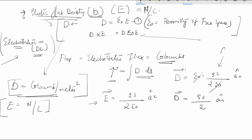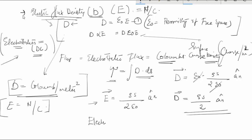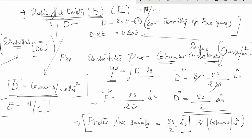Here rho_s is the surface charge density, meaning charge per meter squared. So the electric flux density D equals rho_s divided by 2 times A_n. The unit is coulombs per meter squared, consistent with rho_s being charge per meter squared, as evident from this same case.